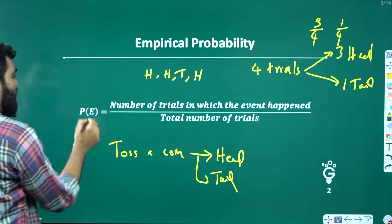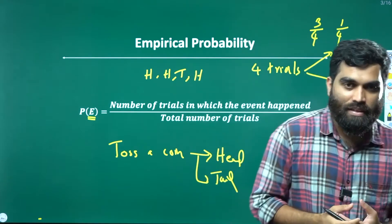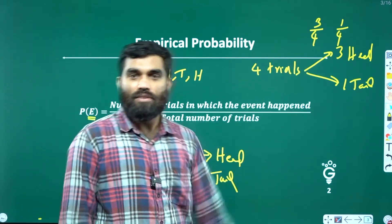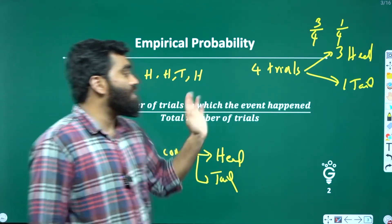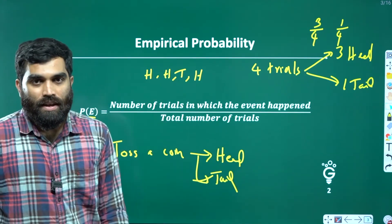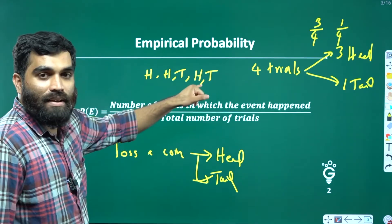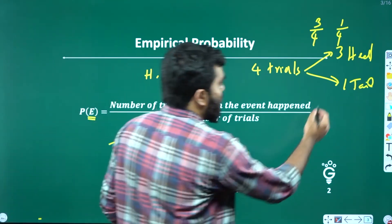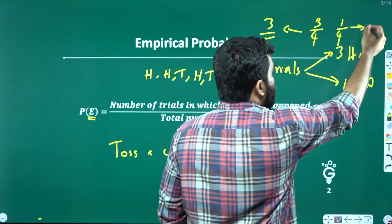We have P of E, where E is an event. I will come to that later. What is an event? We have to define events. For example, getting a head — that is the event. The number of trials in which we got a head, divided by the total number of trials. In 4 trials we have 3 heads, so head probability is 3 by 4, and tail is 1 by 4.